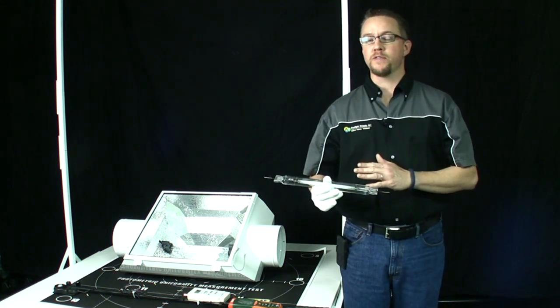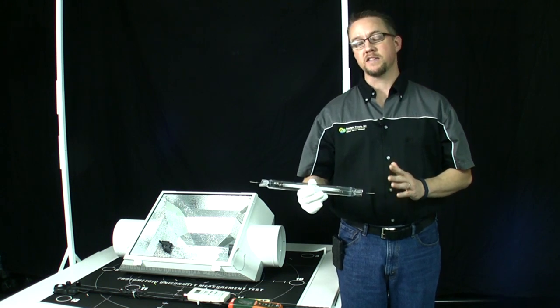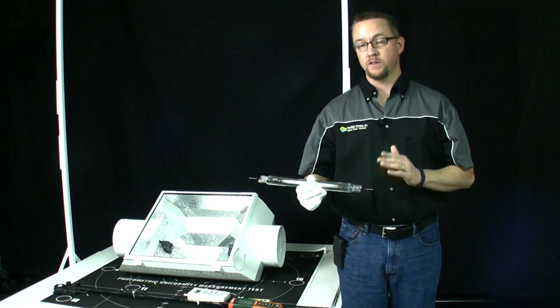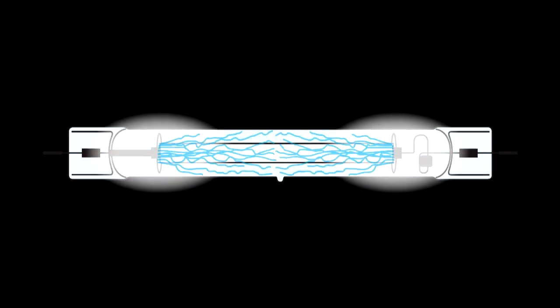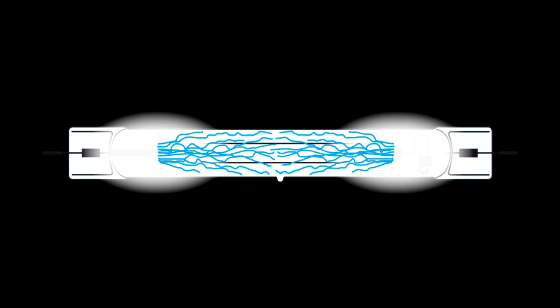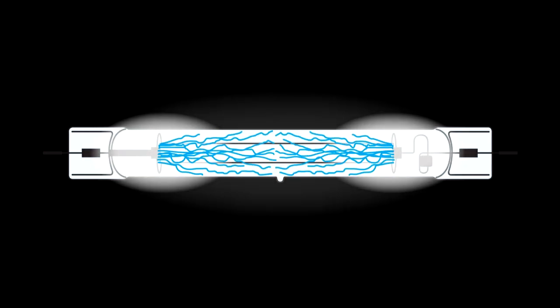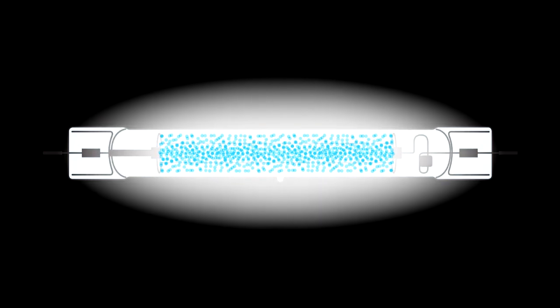Inside the arc tube, there are three major reactions that must take place in order for the high-pressure sodium lamp to properly and efficiently operate. The lamp is started with a high-voltage ignition pulse, which ignites the initial low-temperature arc through xenon gas. This is when the arc tube emits a deep blue color of light.